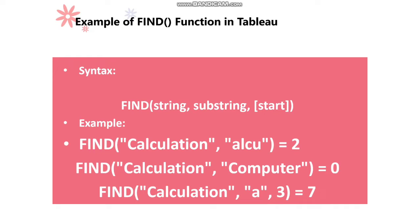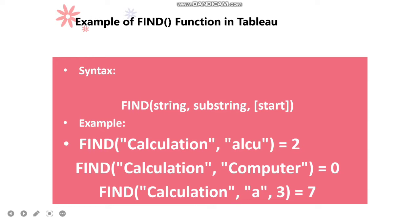We have three examples. FIND('calculation', 'ALCU') equals 2. So 'calculation' is the string and 'ALCU' is the substring. We didn't provide any start argument, so it checked the substring in the entire string and returned 2, because from the second position onwards we have 'ALCU' available.